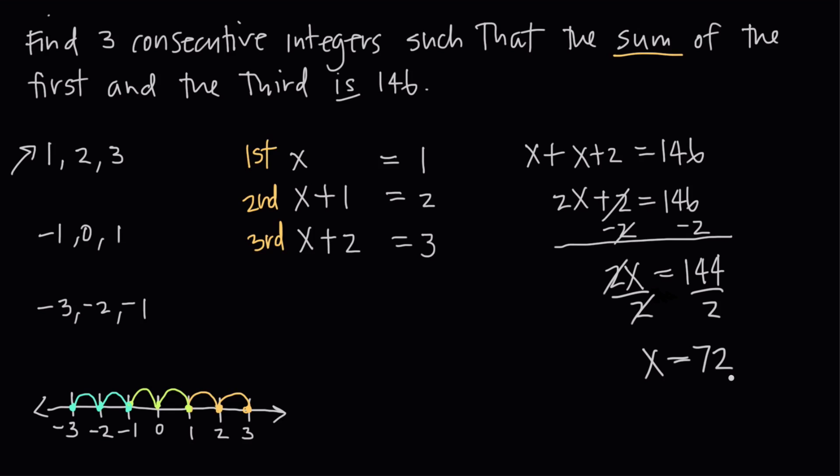Now that we know that x equals 72, remember we said our first term was x. So our first term is going to be 72. Our second term is x plus 1, or 72 plus 1, which is 73. And then our third term is 72 plus 2, or 74.